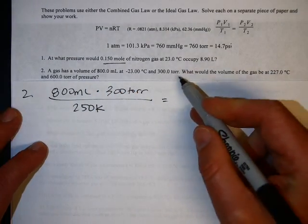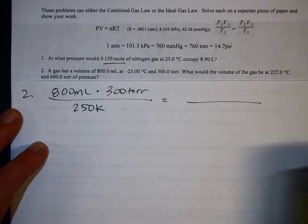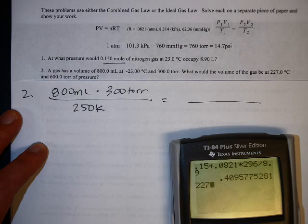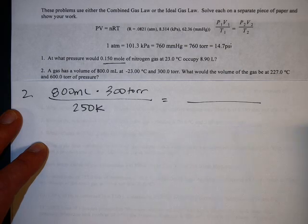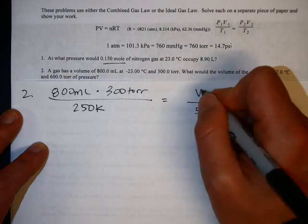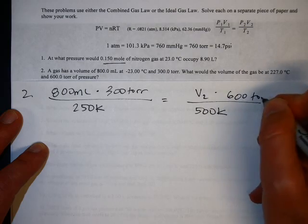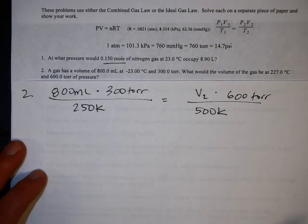Set it equal to the new temperature, which is jacked way up. 227 plus 273 is 500 Kelvin. The volume we're solving for, and the pressure is 600 torr.